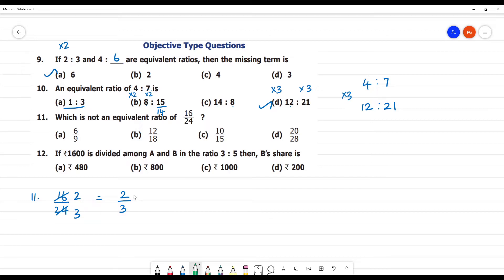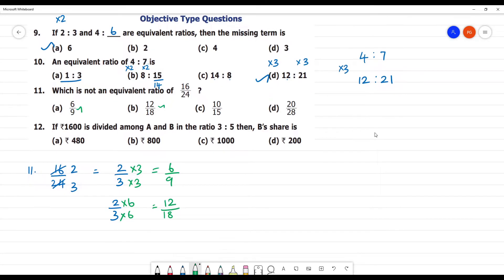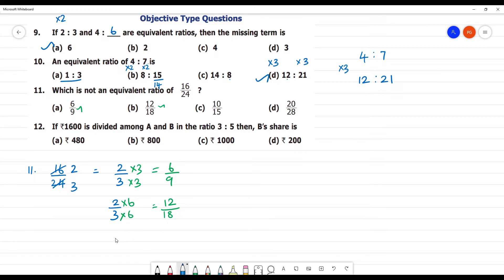Now, 2 multiplied by 3. 3 multiplied by 3. 6 by 9. So, this is equivalent ratio. Next. This is 2 by 3. Now, 18 is 6. Multiplied by 6. 6 is 12. 6 is 18. So, this is equivalent ratio. Next one is 10 by 15. This is equivalent ratio.